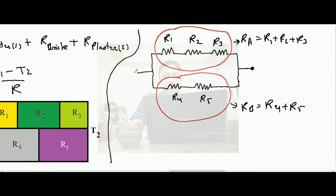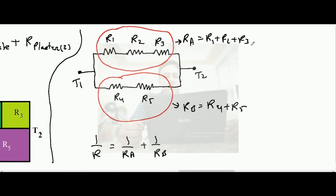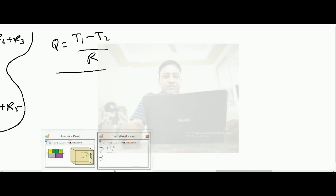Since R_A and R_B are in parallel, 1/R_overall = 1/R_A + 1/R_B. Once the overall thermal resistance R is found, the heat transfer rate is q = (t1 − t2) / R_overall.